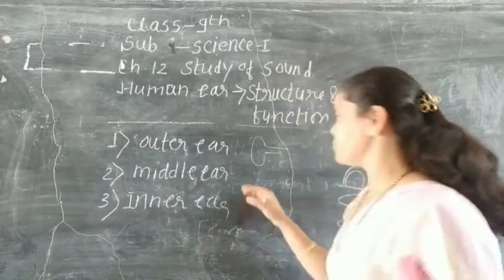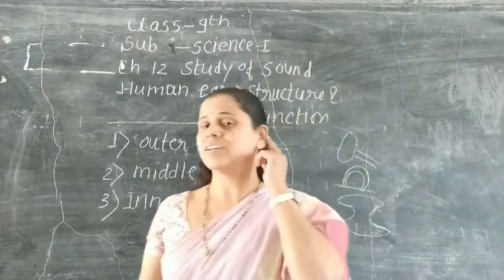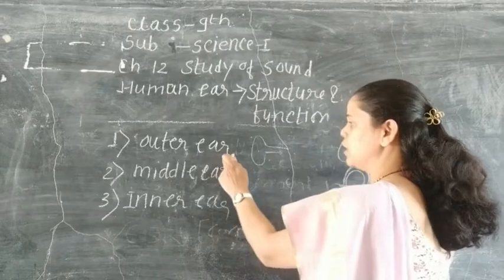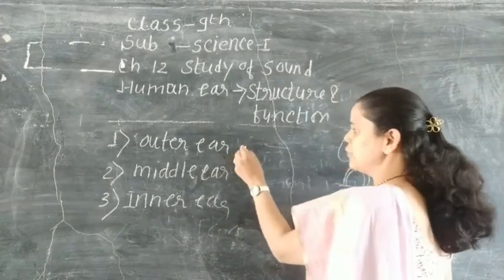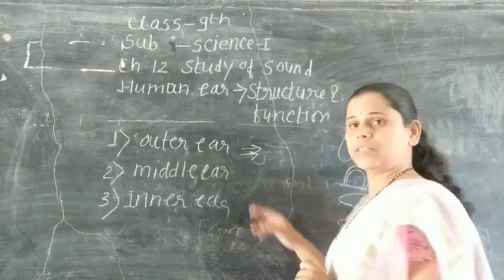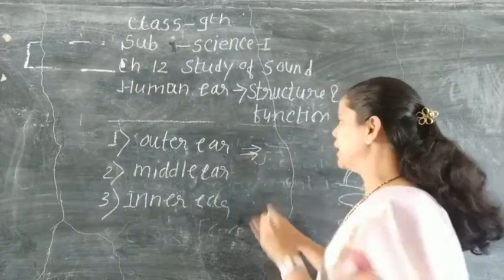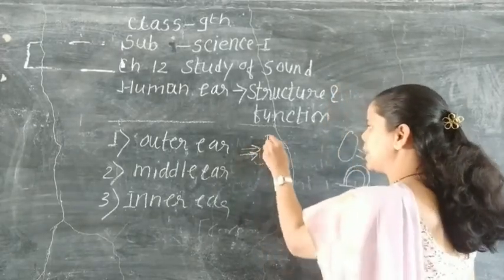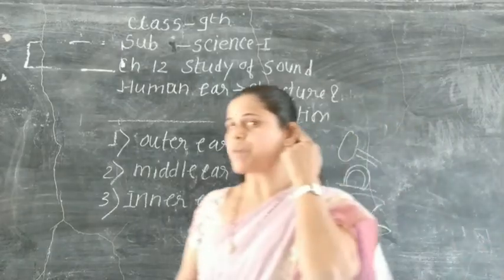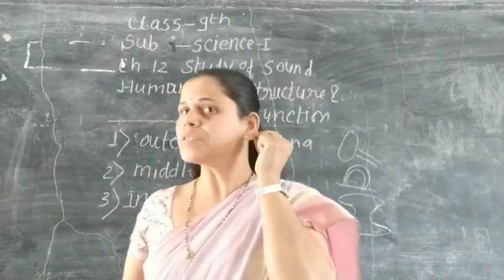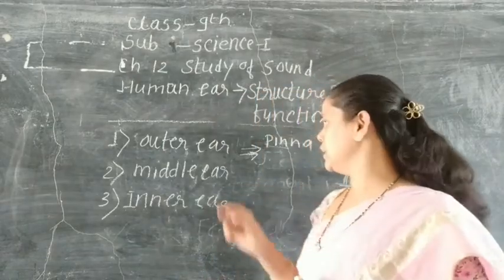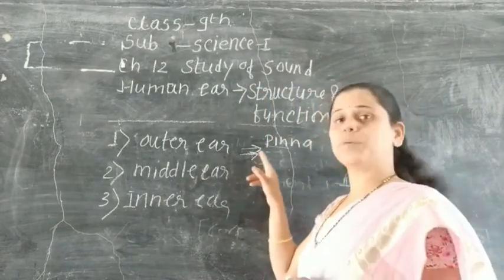The outer ear consists of two organs. The first one is the pinna. This outer part of our ear is called the pinna.